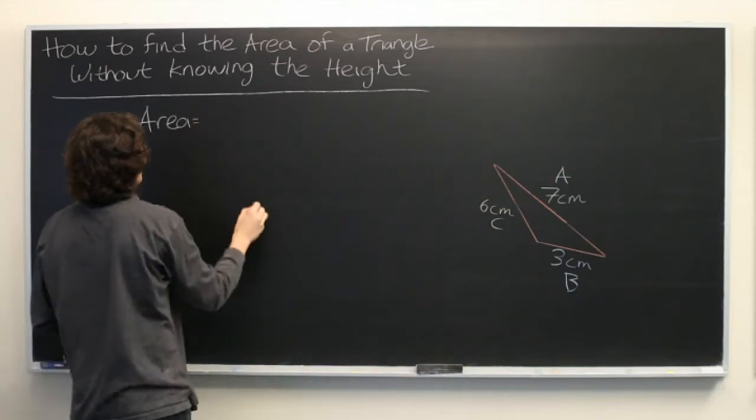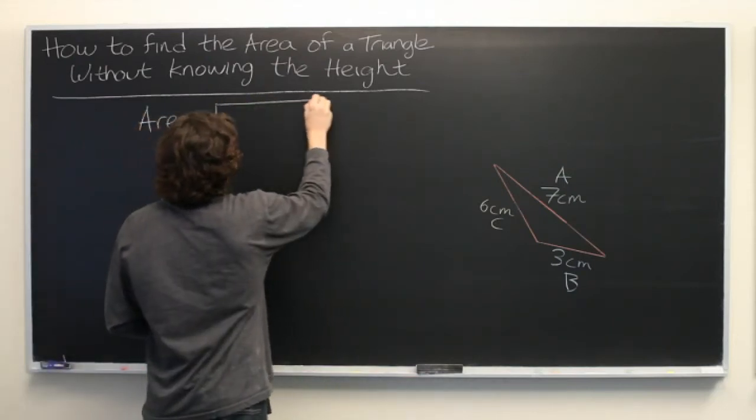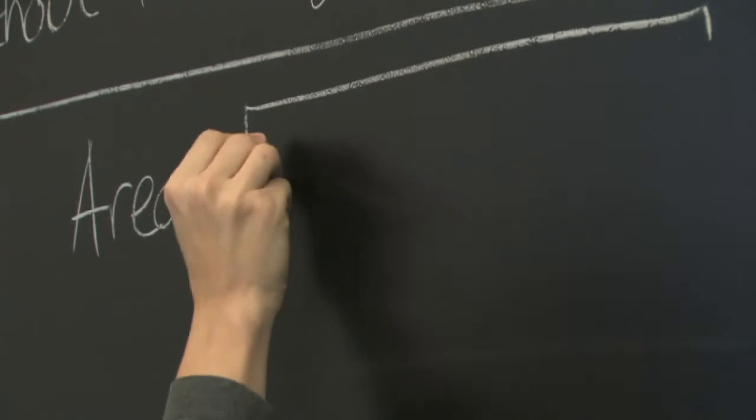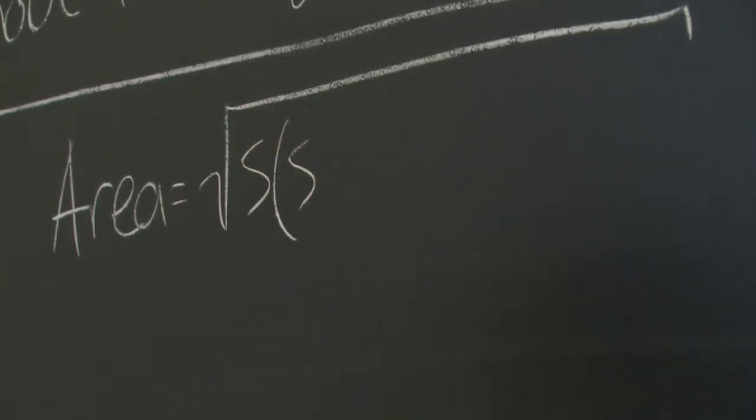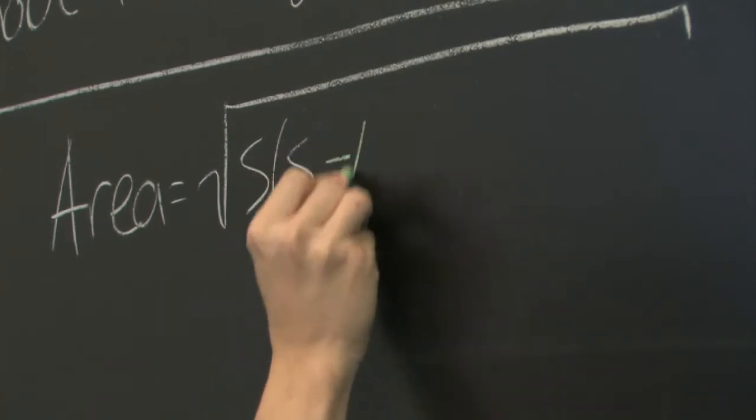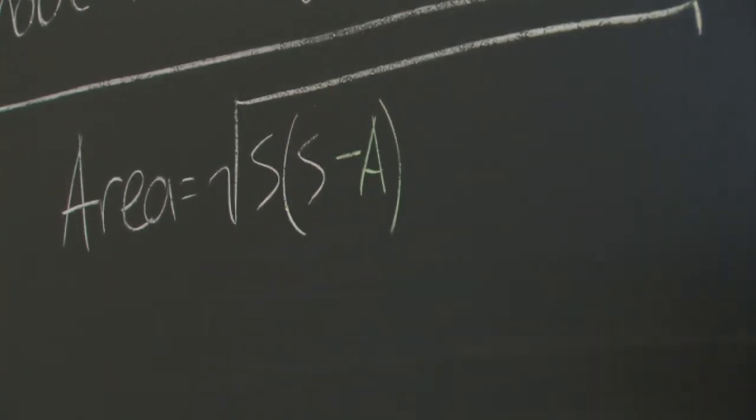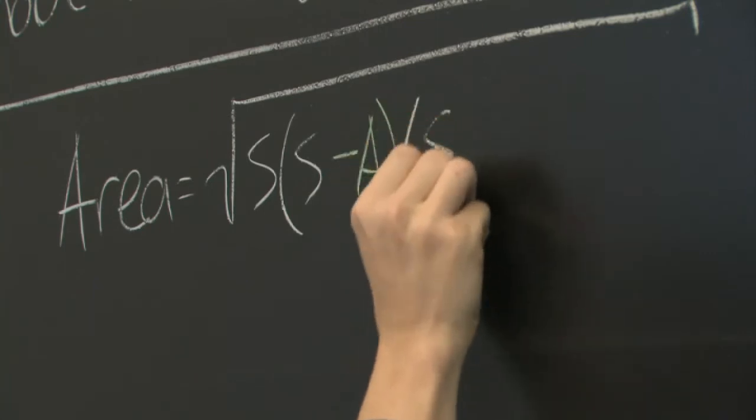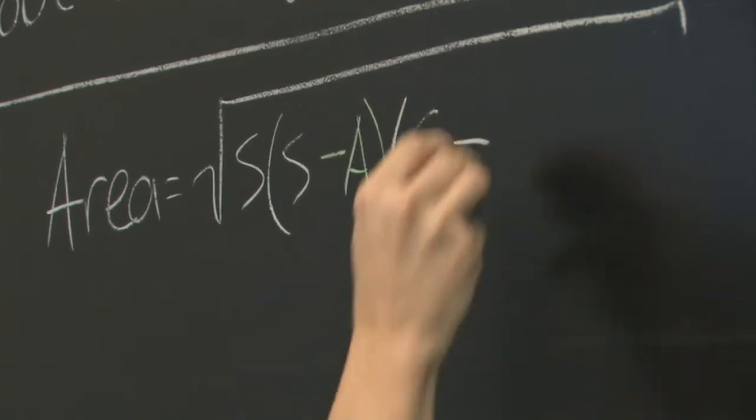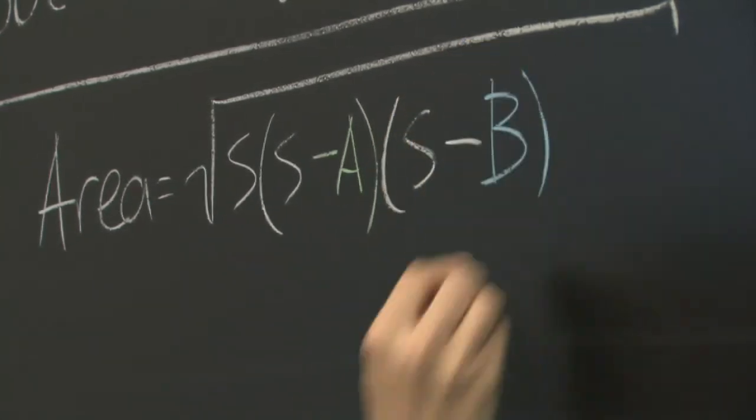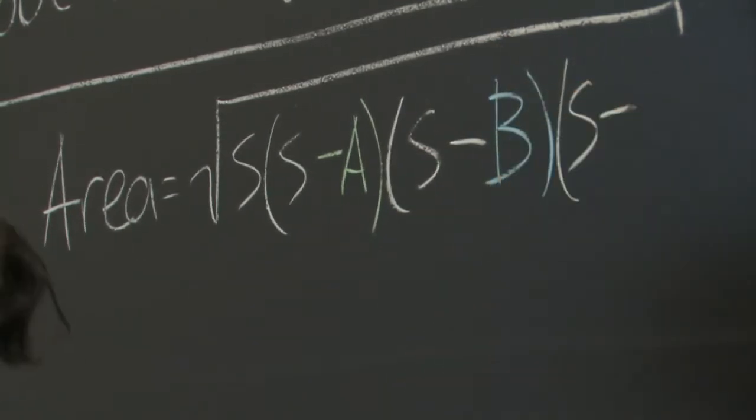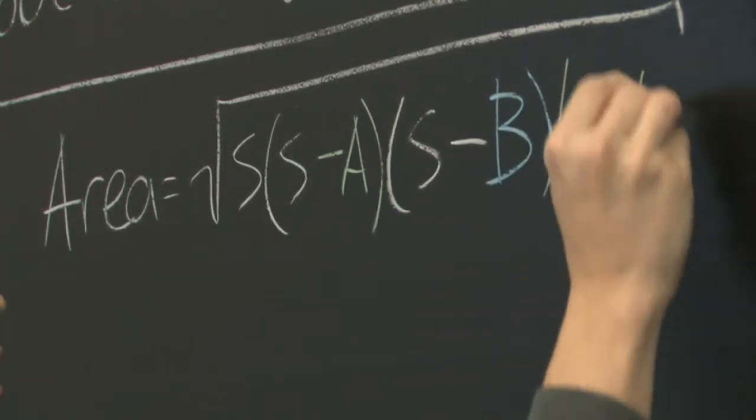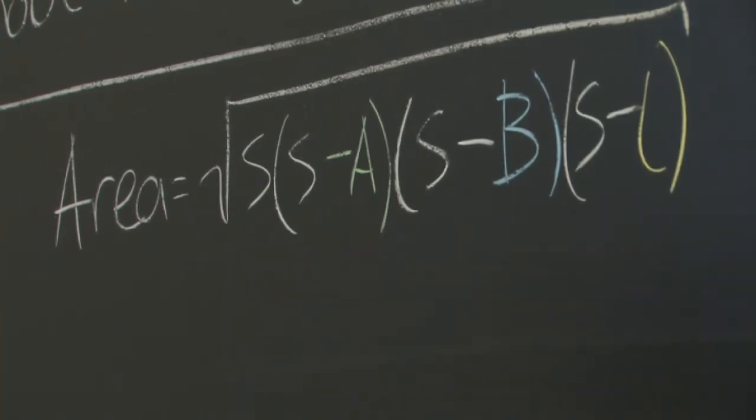Area equals the square root of S times (S minus A) times (S minus B) times (S minus C).